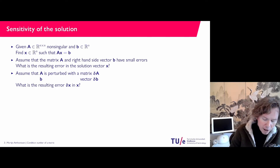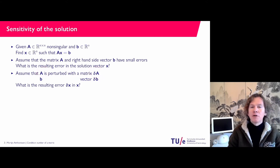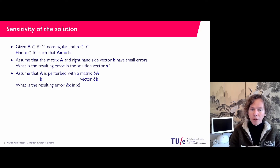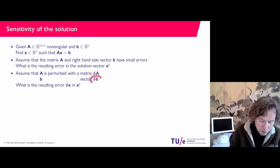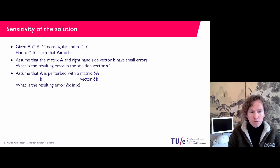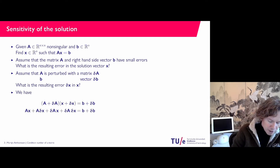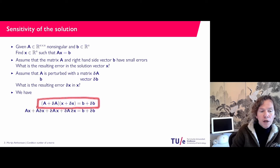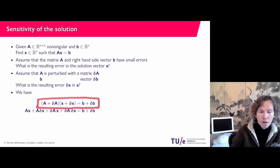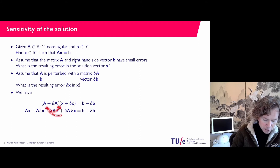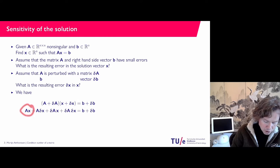Let us say that we have a matrix delta A — delta A is a matrix of the same size as A, and every entry is a small perturbation, a small error in the entries of A. Similarly, we have a vector delta B, which is the errors in B as a vector. We are interested in finding what is delta x. What we have is that x plus delta x is the solution of the perturbed linear system — the linear system with A plus delta A as a matrix and B plus delta B as the right-hand side vector. Multiplying out, we have A times x, A times delta x, delta A times x, and delta A times delta x.